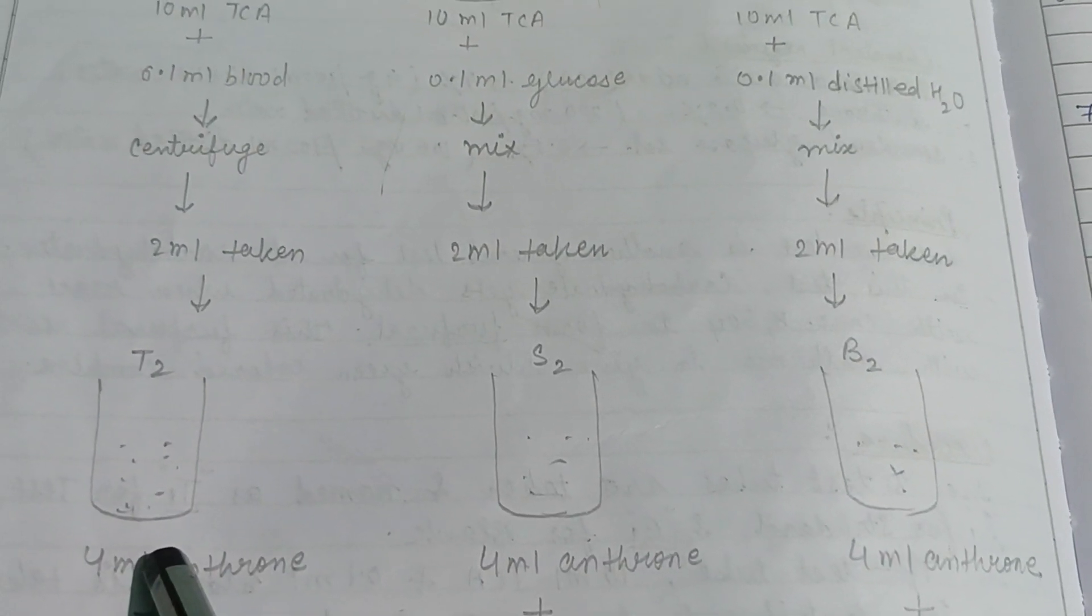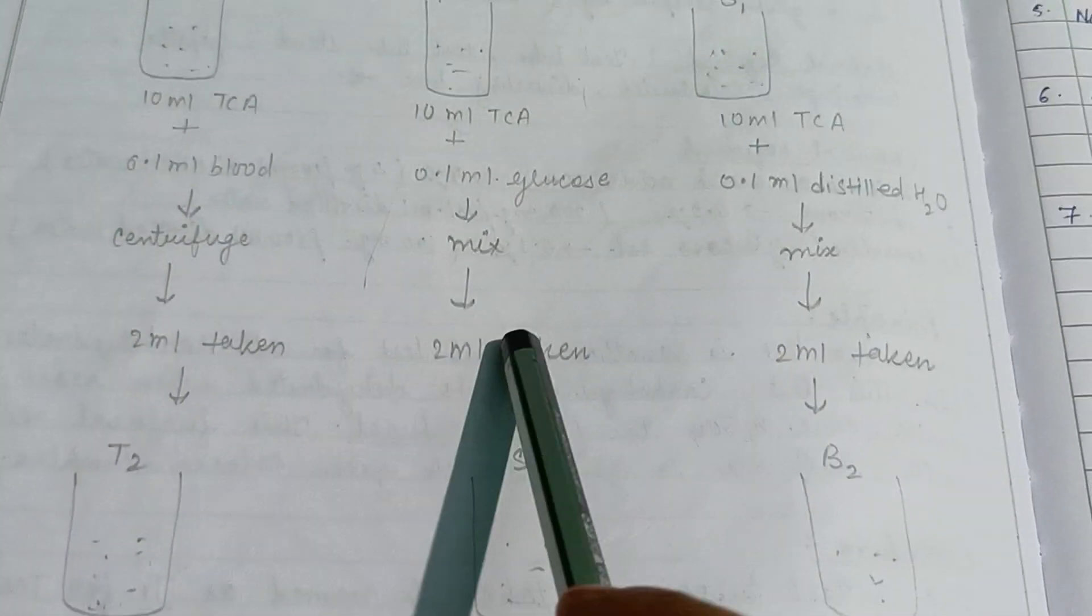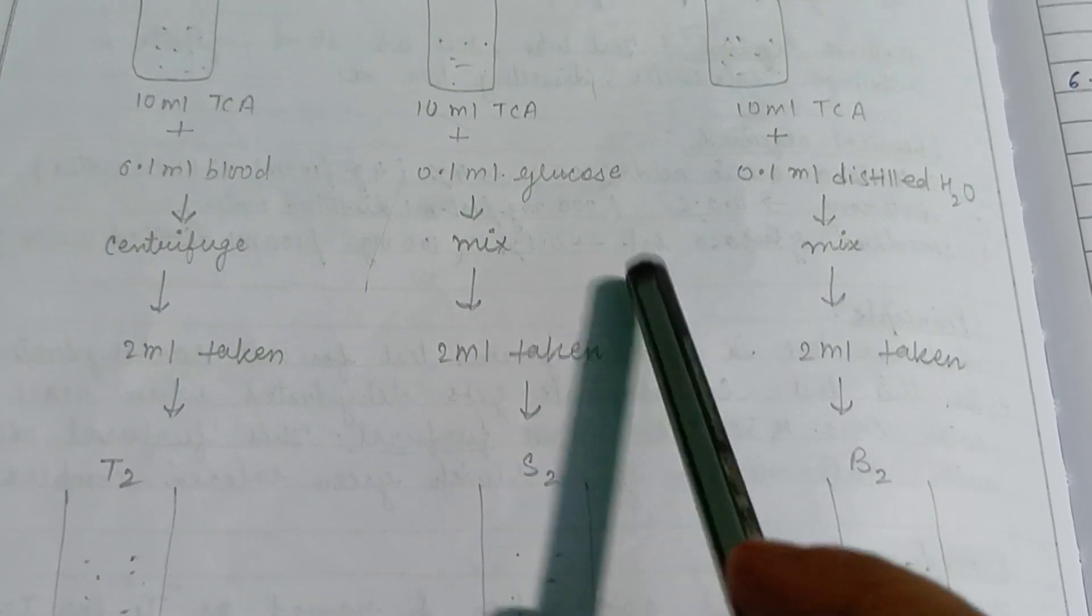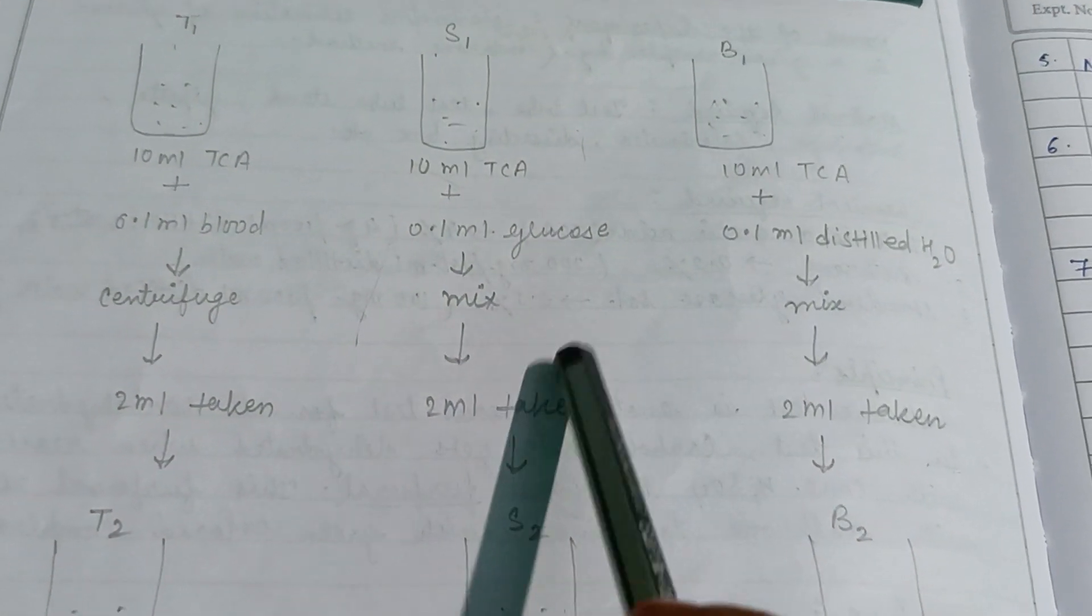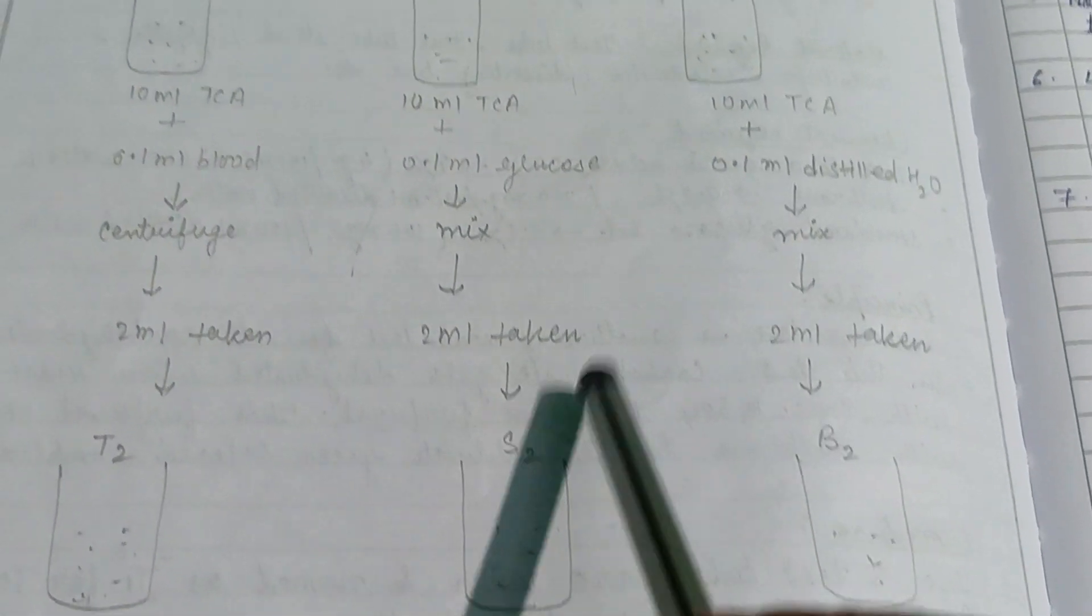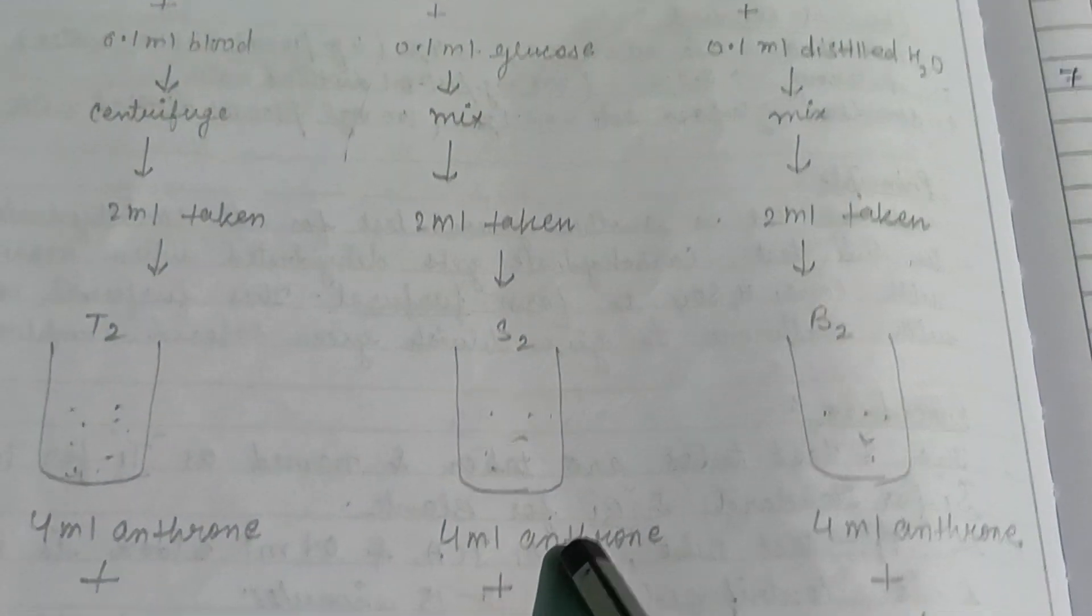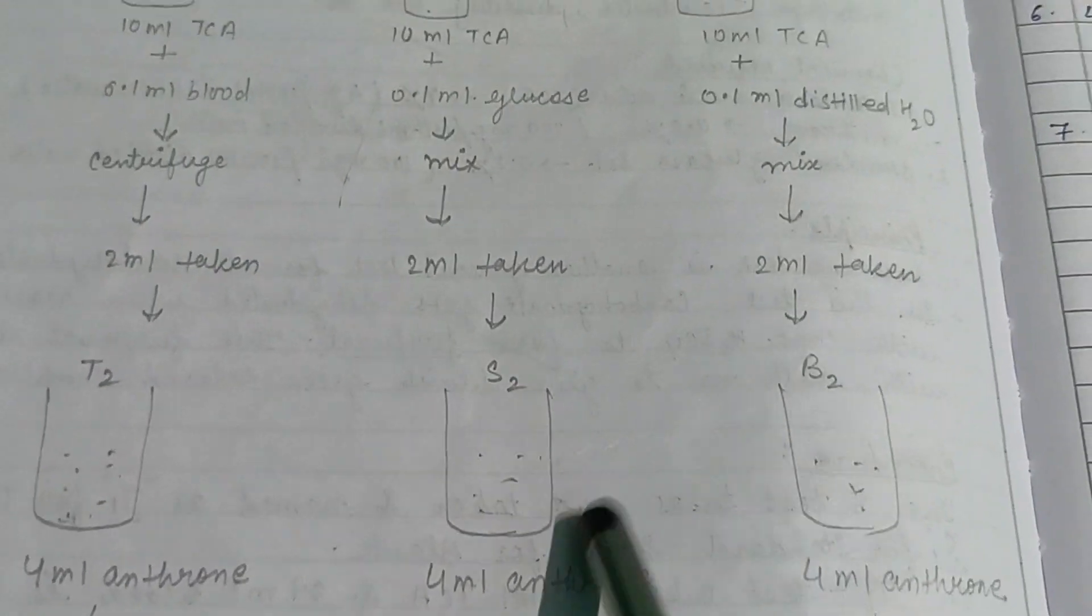0.1 ml glucose is added in S1, then it is mixed thoroughly. 2 ml of S1 is taken in another test tube named as S2. Similarly, in test tube B1, 0.1 ml distilled water is added.